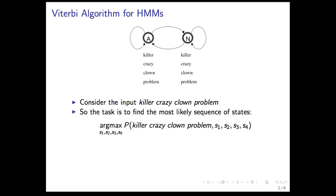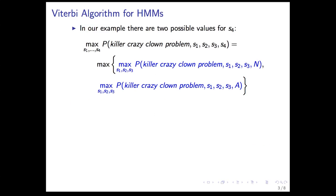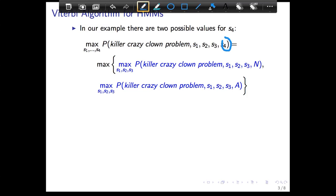Our task is to find an assignment to s1, s2, s3, s4 that maximizes the probability. We can think of a sub-problem: look at the prefix killer, crazy, clown. There are 2 to the 3 possibilities for that sequence of states. In this particular HMM there are only two possible states: N or A. So s4 can either be N or A and can't be anything else.